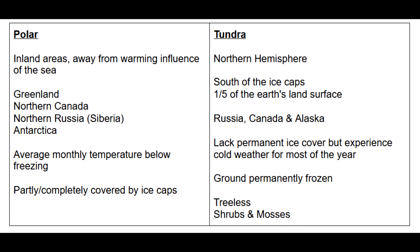We also want to make a comparison between polar and tundra regions. Pupils need to understand there is a difference between these areas. Polar regions tend to be inland areas away from the warming influence of the sea, with examples such as Greenland, northern Canada, northern Russia and Antarctica. The average monthly temperature is below freezing and these areas are partly or completely covered by ice caps.